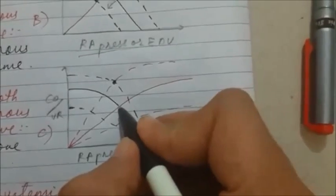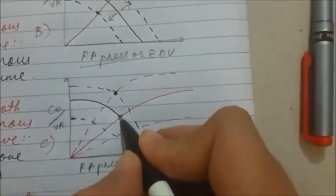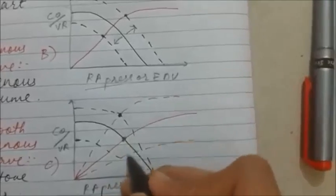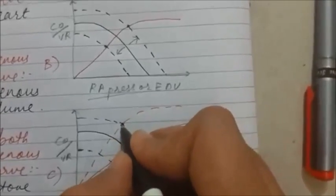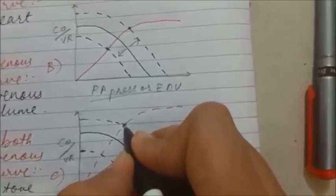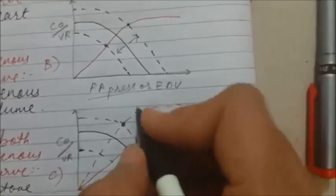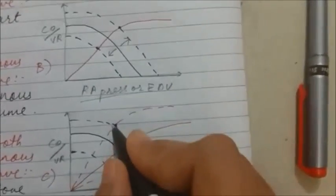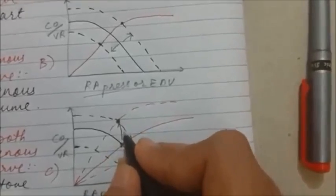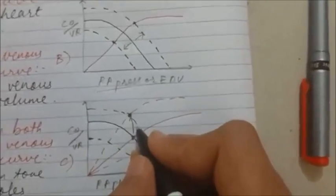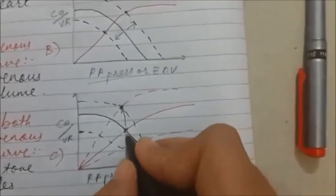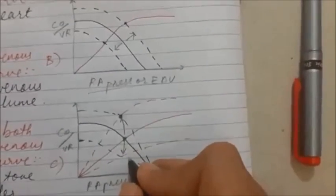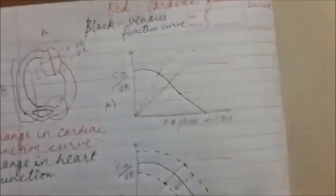If you cause arteriolar dilation, it will increase both cardiac output and venous return. In case of arteriolar dilation — like drugs such as hydralazine — the curve moves upward, increasing both cardiac output and venous return by decreasing total peripheral resistance. Arteriolar constriction causes the opposite: a decrease in cardiac output and a decrease in the venous return curve.